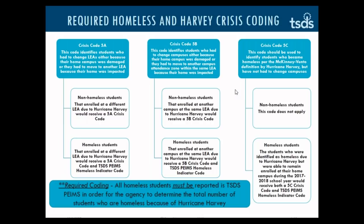Moving to the column in the center of the chart, Crisis Code 5B identifies students who had to change campuses either because their home campus was damaged or they had to move to another campus attendance zone within the same LEA because their home was impacted. Non-homeless students that enrolled at the same LEA due to Hurricane Harvey would receive a 5B Crisis Code. Homeless students in the same situation would receive a 5B Crisis Code and a TSDS PIMS homeless indicator code.